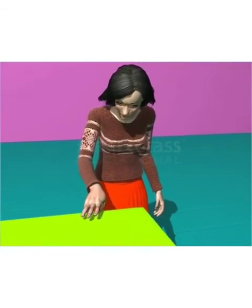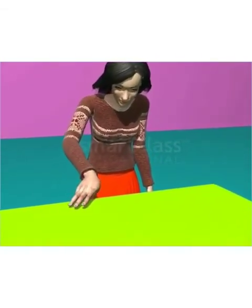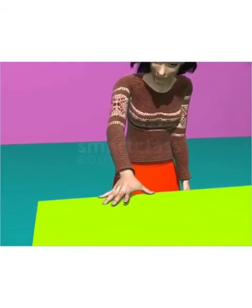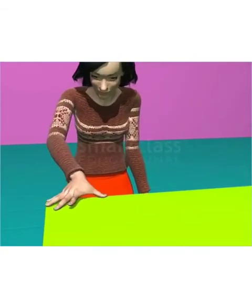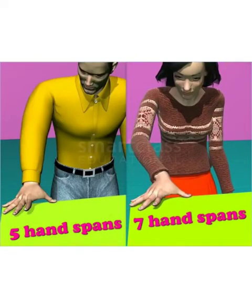Now, Asli is going to measure. 1, 2, 3, 4, 5, 6, 7. Now, the hand span for Asli is 7. So, the measurement varies. Isn't it? So, it is a non-standard unit.